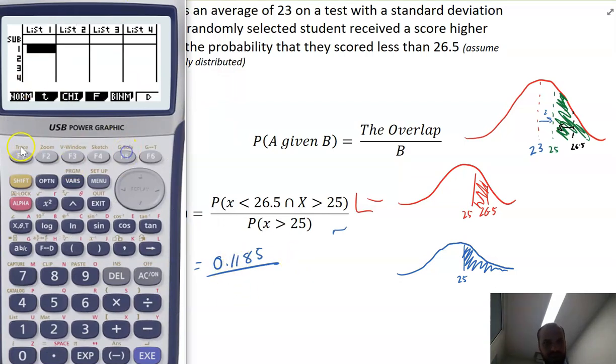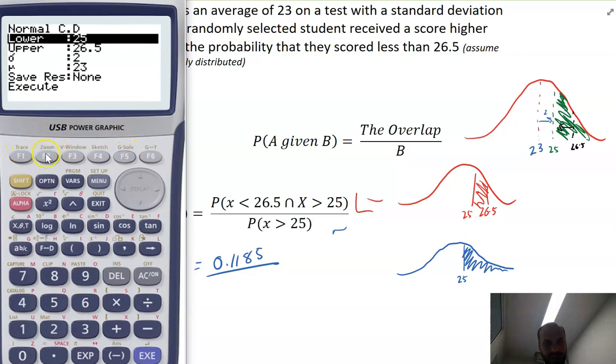And now I do my next one. Distribution. Normal. NCD. And I want more than 25. So I'll put an upper of a very large number. Lower of 25. Everything else is right. And we get 0.1587.